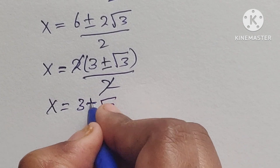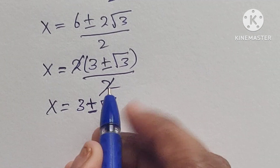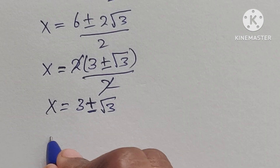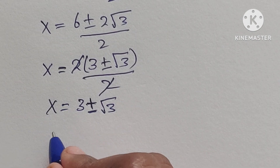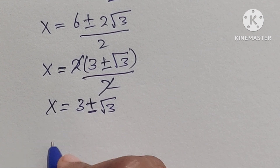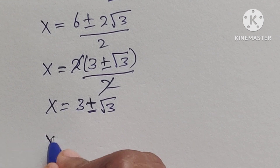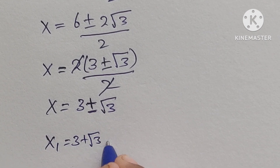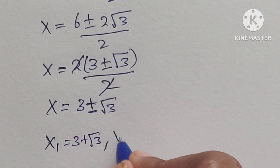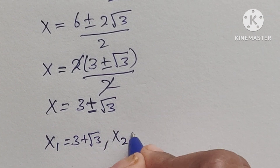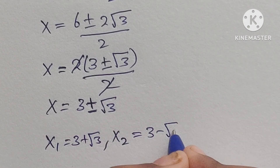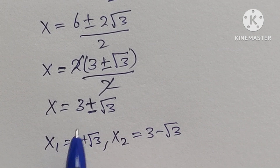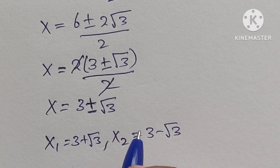Now we split the answer into two parts. The first solution is x1 equals 3 plus square root of 3, and the second solution is x2 equals 3 minus square root of 3. So we have found both x values.